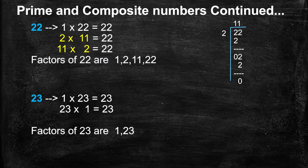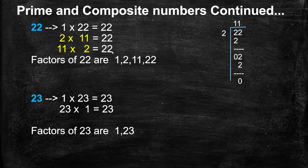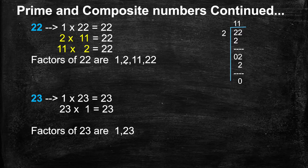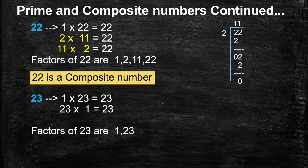Next, 22. We know 1 is a factor of every number, so 1s are 22, 22. 22 is a multiple of 2 because the ones place is an even number. When we divide 22 by 2, we get quotient 11. So 2s are 11, 22. 22 is not a multiple of 3. At last, 11s are 2, 22. We stop here because 2 and 11 have occurred earlier. Factors of 22 are 1, 2, 11, 22. So 22 is a composite number.